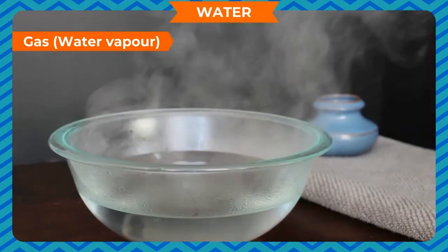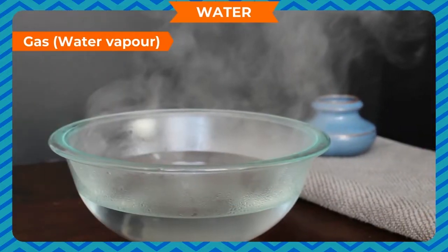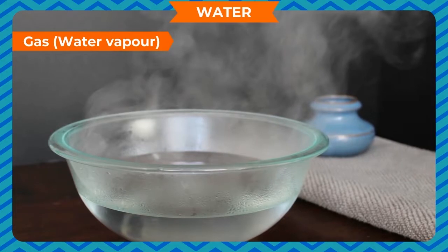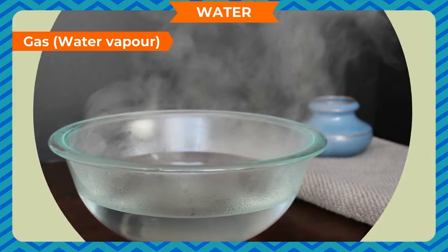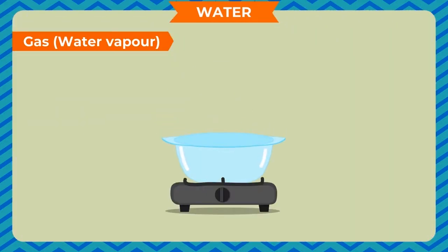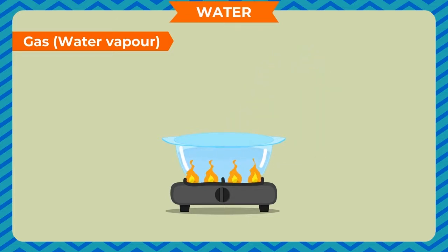Gas water vapor: when water is boiled, it changes into water vapor. We can see these vapors coming out of the pot. Water vapor is a gaseous form of water. The process of conversion of water into water vapor on heating is called evaporation.